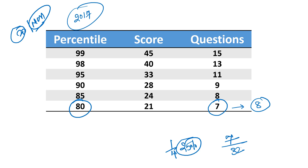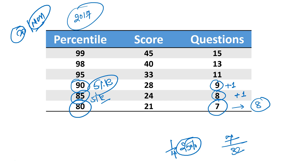See how easy this is. If you attempt 8 questions — plus one — and answer that question correctly, your percentile will boost by 5. So you gain 5 additional percentile. When you're doing LRDI, keep this thing in mind. Each correct question at the initial level gives you an increment of 5 percentile.